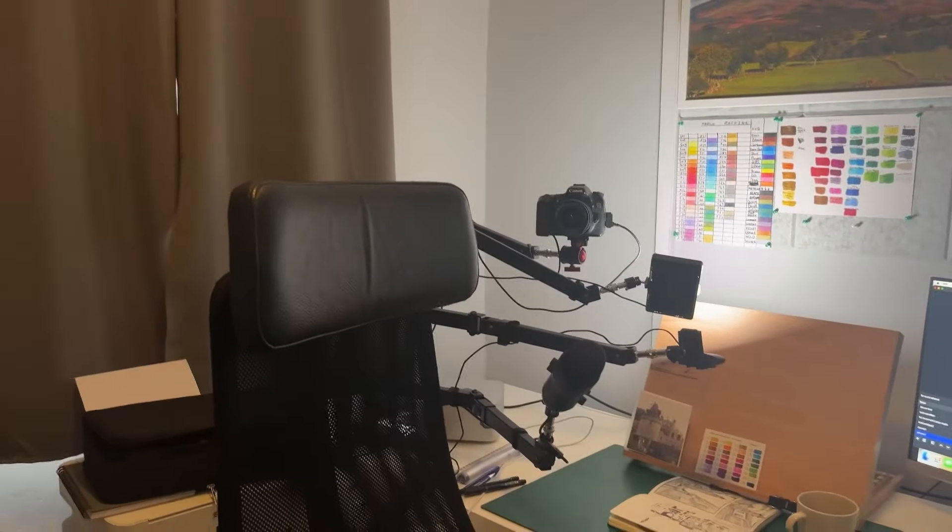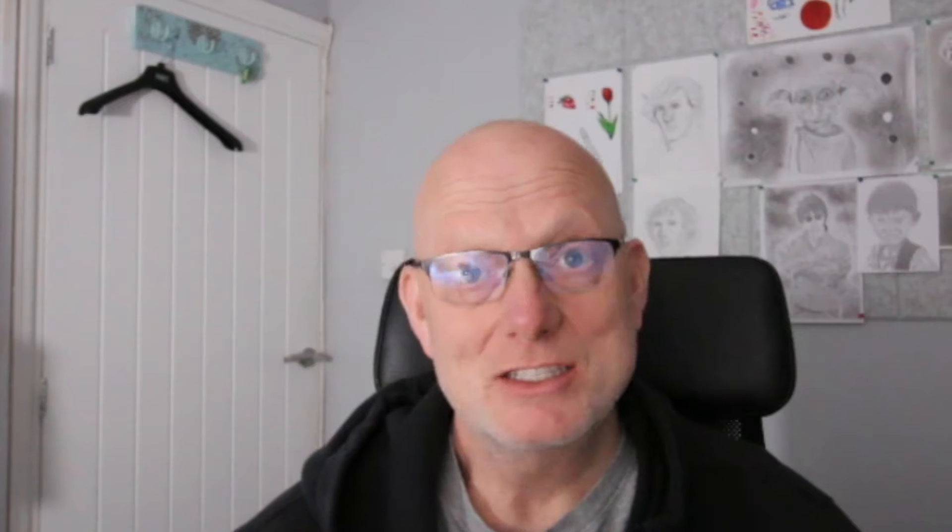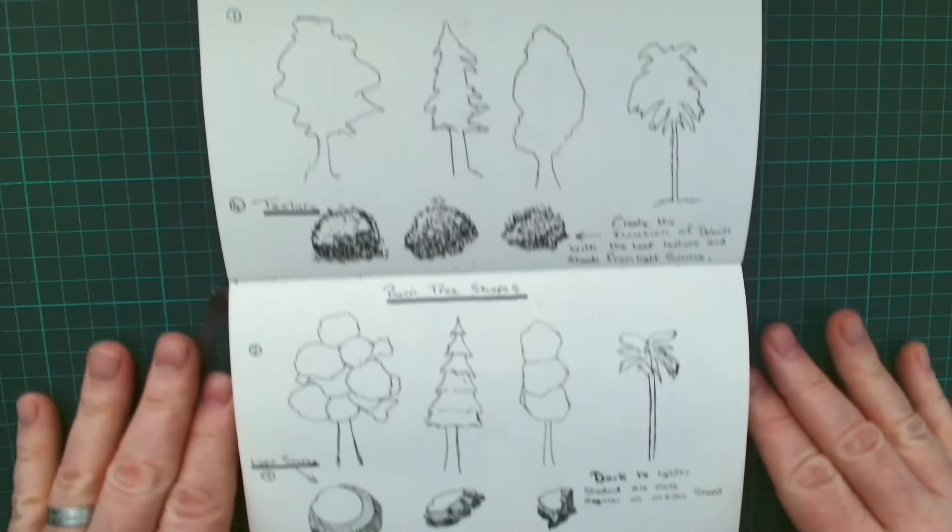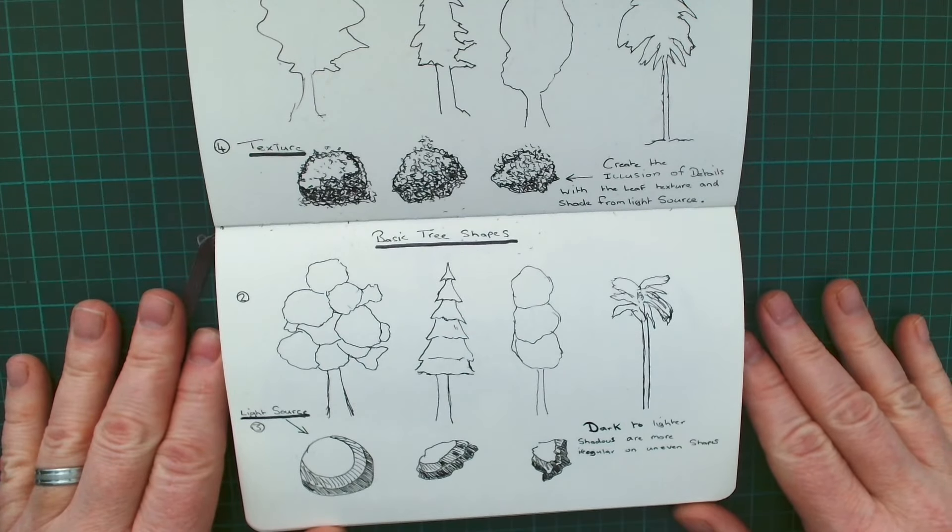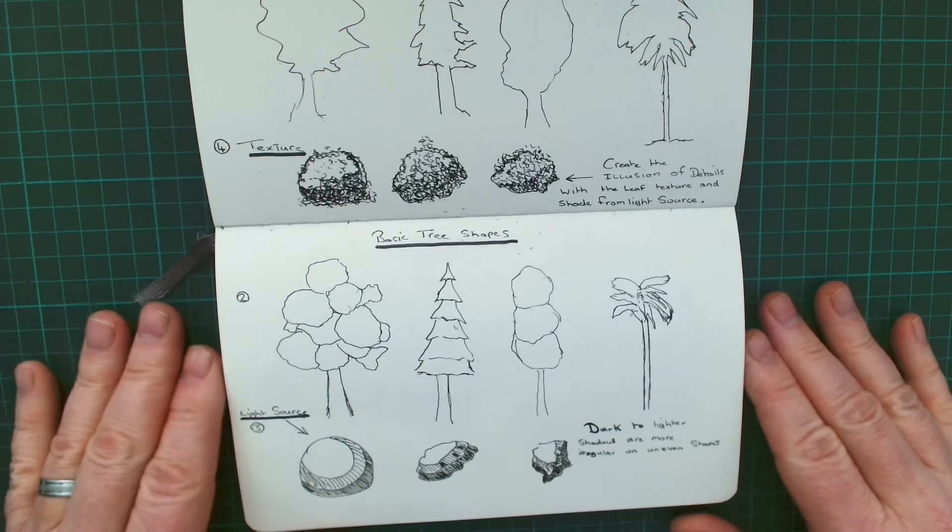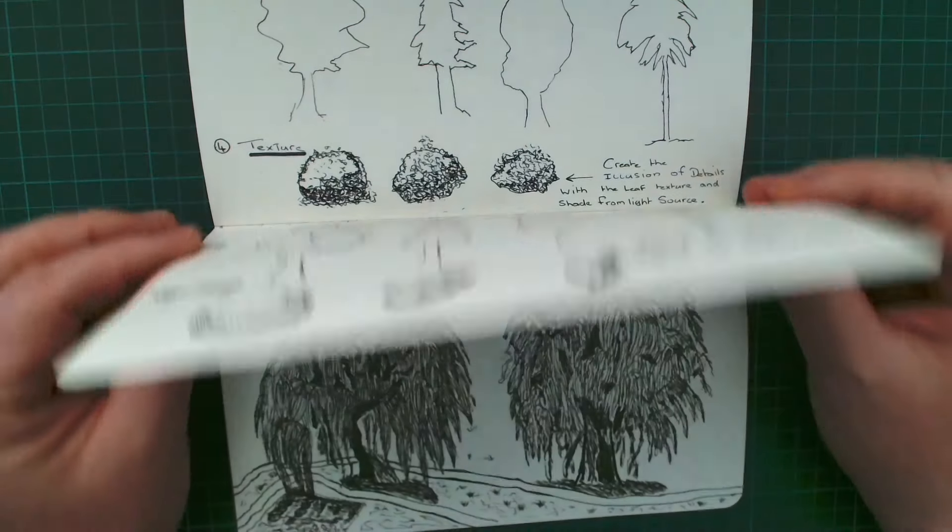This week I've continued many of the fine liner architecture works that I did in the previous vlog, and along with that I've also learned how to do trees. Learning about texture and shade, and then creating some of those trees.